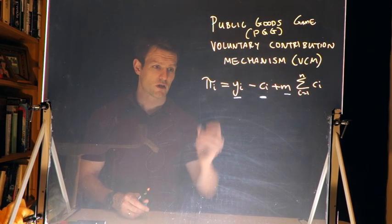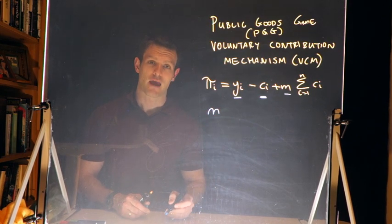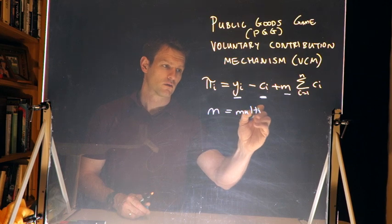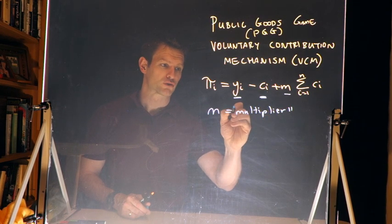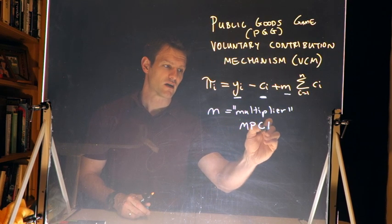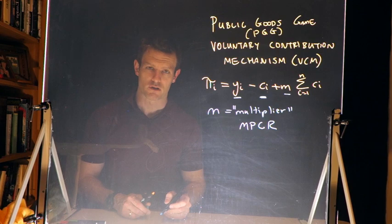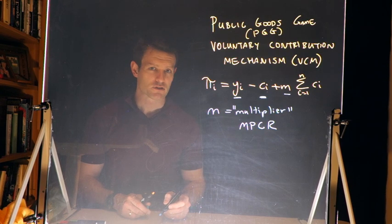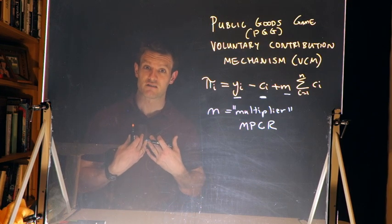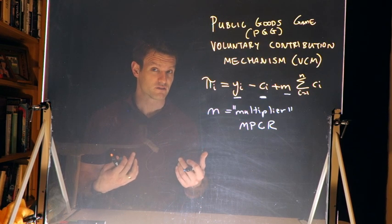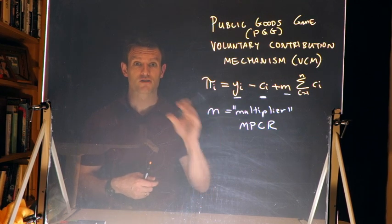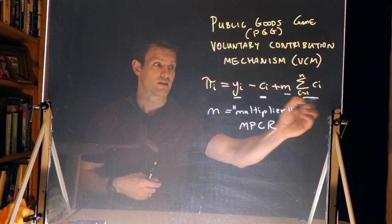Now when we think about this, we want to understand what m is. M is what we call a multiplier, and it is often also called the MPCR, or Marginal Per Capita Return. The marginal per capita return is called that because it's suggesting the return that I receive, that each player receives, in fact, hence per capita, at the margin for each marginal dollar that is contributed to the public good.